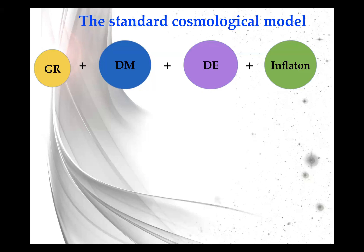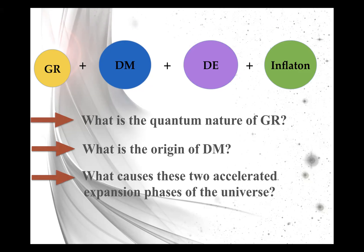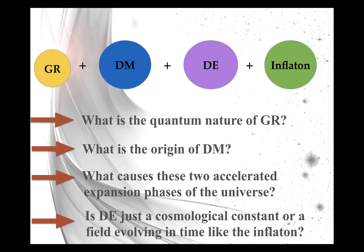Let me start with the standard cosmological model. We have this beautiful, simple model that works very successfully, based on general relativity, dark matter, dark energy, and the inflaton field. Even though this theory is very simple and works well in explaining most observations, there are still challenging questions: the quantum nature of general relativity, the origin of dark matter, what causes the two accelerated expansion phases, and whether dark energy is just a cosmological constant or a field evolving in time.